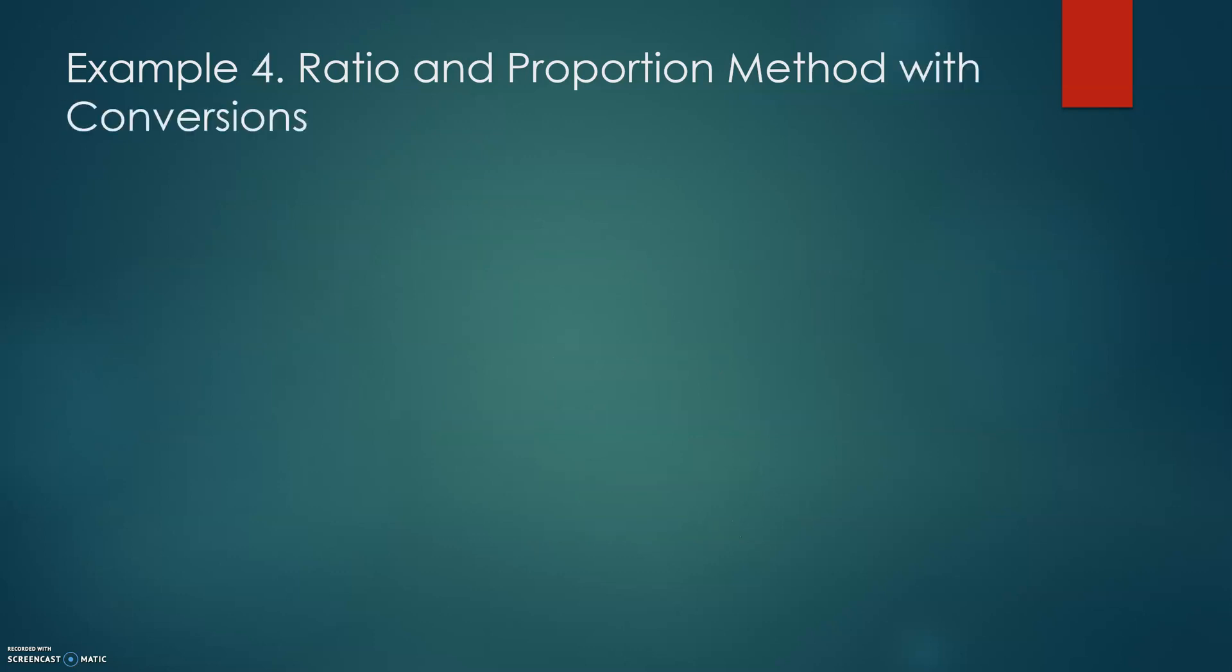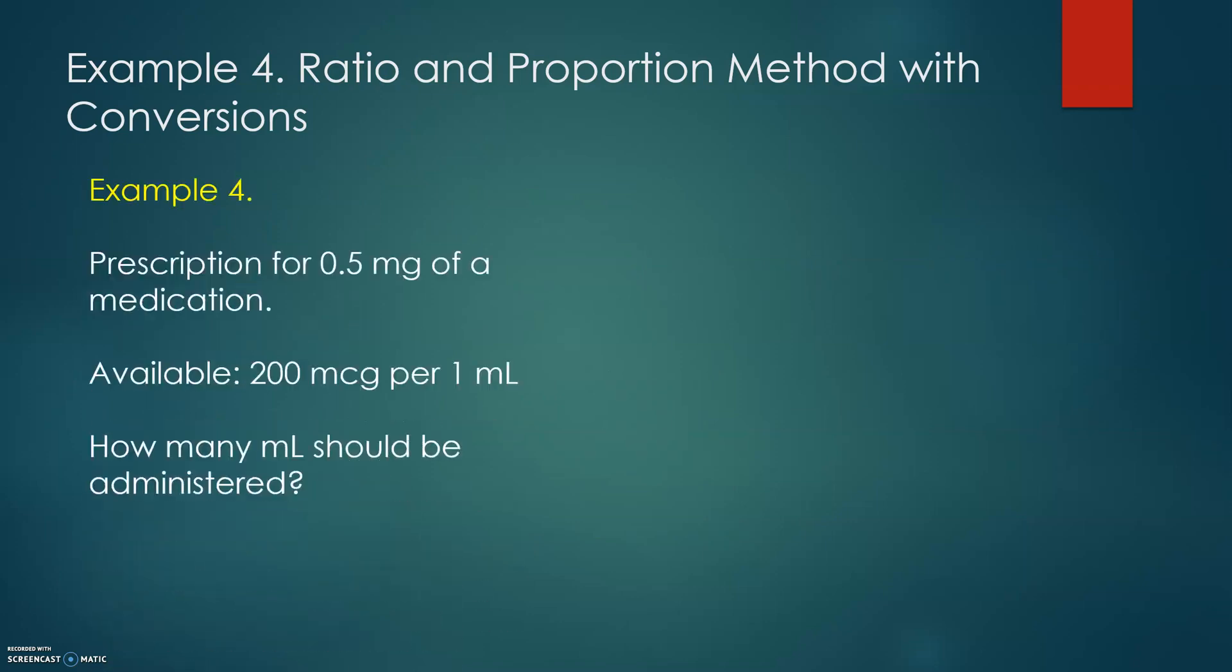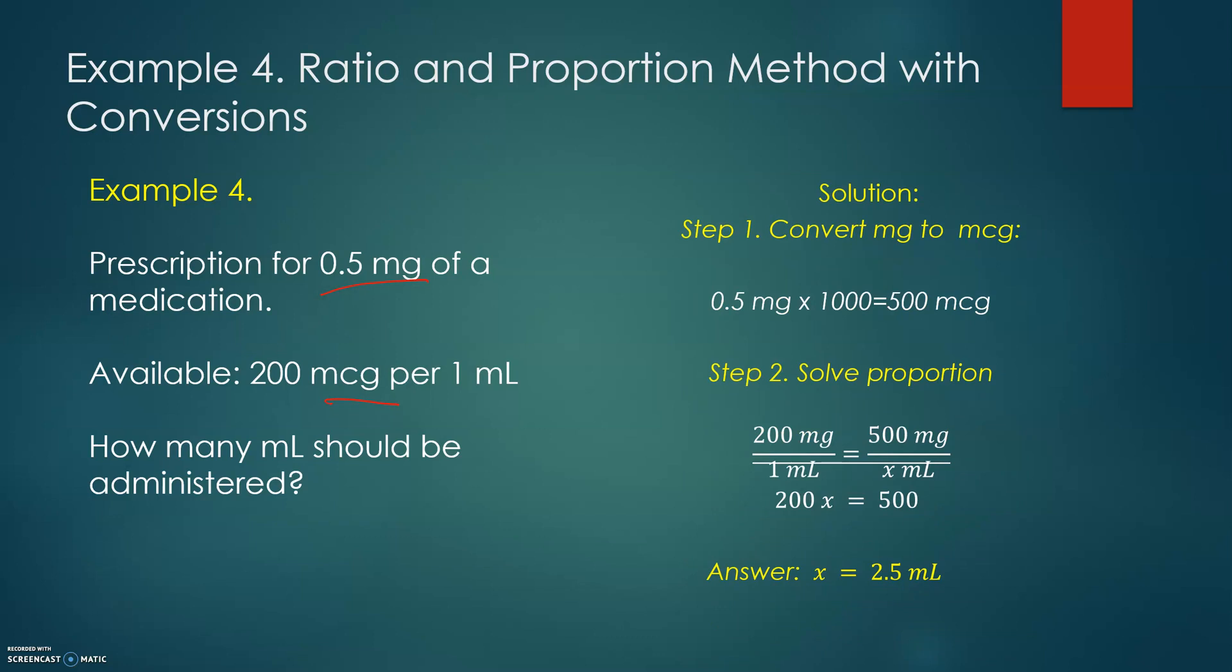In example number 4, I will walk you through the ratio and proportion method with conversions needed for the problem. Prescription: 0.5 mg of a medication, and available: 200 mcg per 1 mL. So please take a look. Right now we have the medication given in different units. Therefore, in order to answer the question how many mL we need to administer, we need to make the conversion first. So here we need to break down into two steps our problem. First, we need to convert.